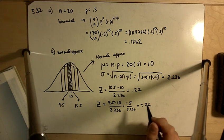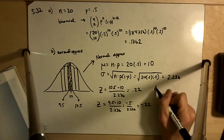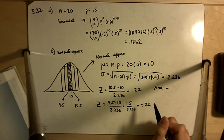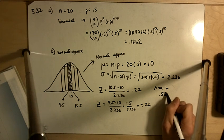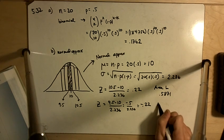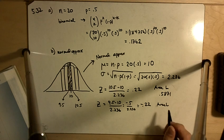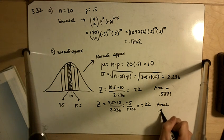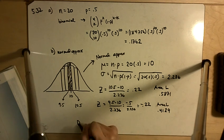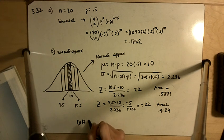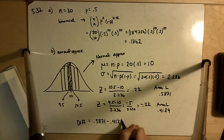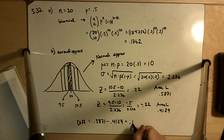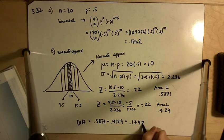The area to the left of positive 0.22 is 0.5871, and the area to the left of negative 0.22 is 0.4129. So the difference is going to be 0.5871 minus 0.4129, and that gives us 0.1742.